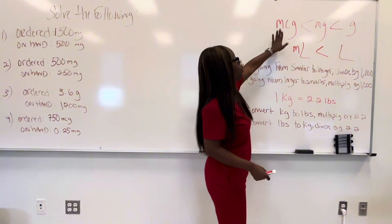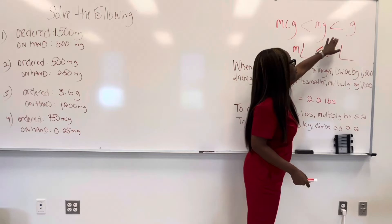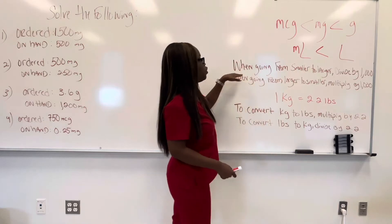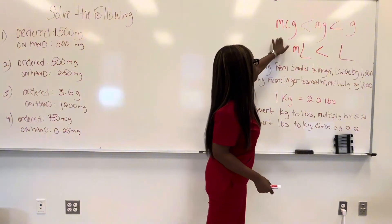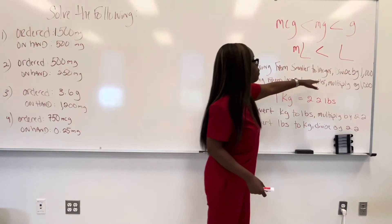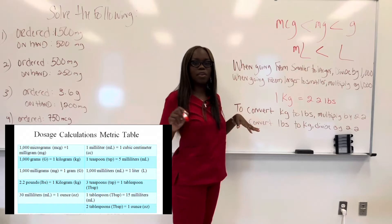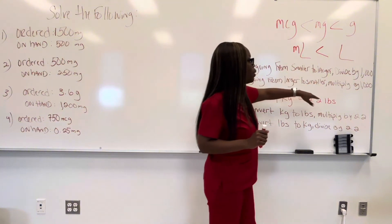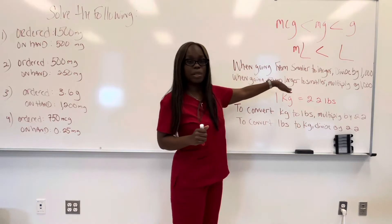Micrograms are smaller than milligrams, and milligrams are smaller than grams. Milliliters are smaller than liters. So whenever you have to convert from smaller to larger — meaning micrograms to milligrams, milliliters to liters, or milligrams to grams — you want to divide that number by 1,000. And when you're going from larger to smaller, you're going to multiply that number by 1,000. As long as you have that foundation of knowing this formula, you're going to be good to go.